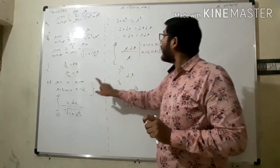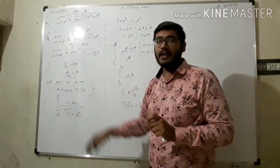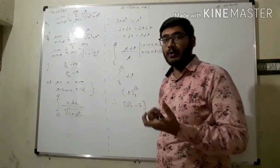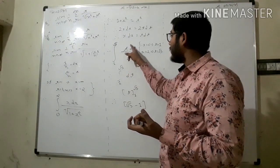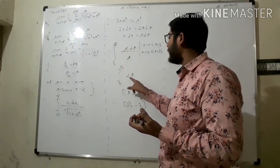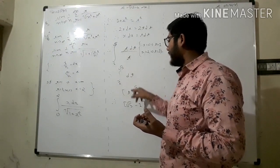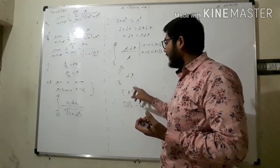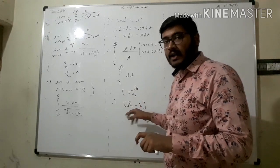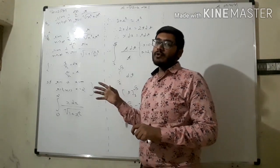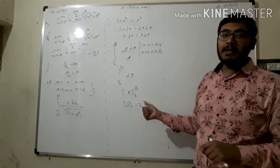Now the integral becomes integration from one to root five of t dt divided by t, under root cancels with the t in denominator, so we get integration of dt from one to root five, giving the result t evaluated as root five minus one.